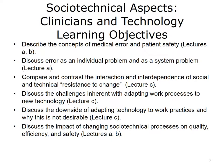The objectives for Sociotechnical Aspects, Clinicians, and Technology are to describe the concepts of medical error and patient safety, discuss error as an individual problem and as a system problem, compare and contrast the interaction and interdependence of social and technical resistance to change, discuss the challenges inherent with adapting work processes to new technology, discuss the downside of adapting technology to work practices and why this is not desirable, and discuss the impact of changing sociotechnical processes on quality, efficiency, and safety.